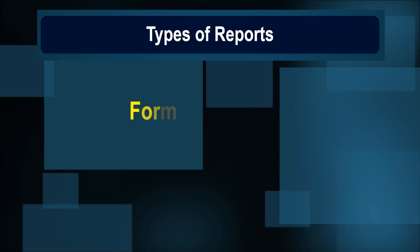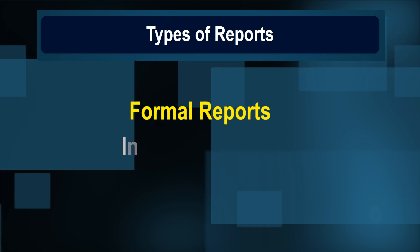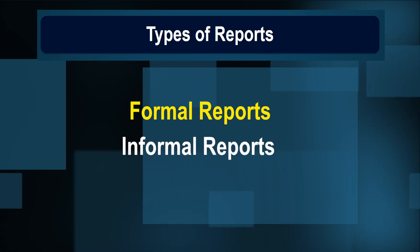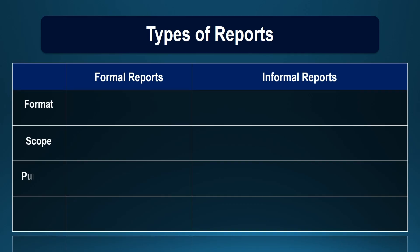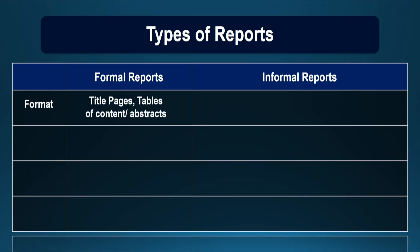A research report can be classified into formal reports and informal reports. Let us compare these two types on the basis of format, scope, purpose, and readers. Formal reports contain the title page, the table of contents, and the abstract, whereas informal reports may or may not have the title page, table of contents, or the abstract.